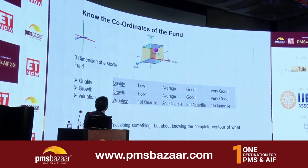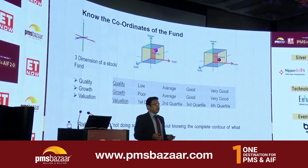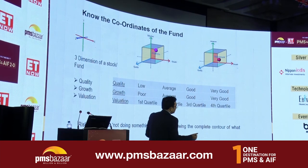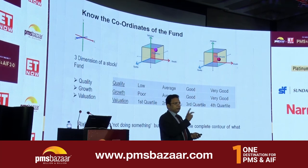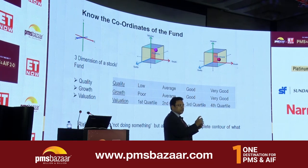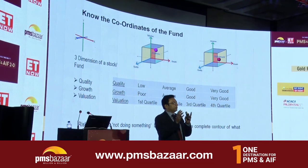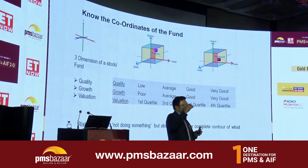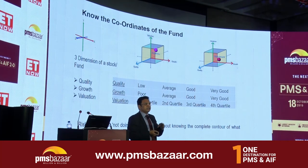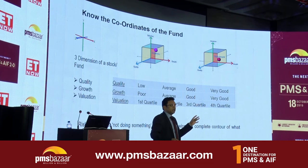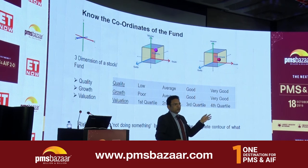Now a couple of points on risk measurement tools. Any portfolio published — even in PMS — has some gross statistics: the overall P/E of the portfolio, the overall quality parameter like ROE, and the weighted average profit growth or sales growth of the portfolio. So for every stock in the portfolio, you look at those three things at a gross level: the quality of the portfolio, the valuation, and the growth attributed to the portfolio.